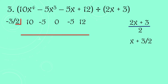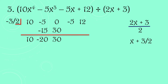Using the same procedure — bring down 10, then multiply and add: 10 × (−3/2) = −15, add to −5 → −20. Then −20 × (−3/2) = 30, add to 0 → 30. Then 30 × (−3/2) = −45, add to −5 → −50. Then −50 × (−3/2) = 75, add to 12 → 87. So 87 is our remainder.